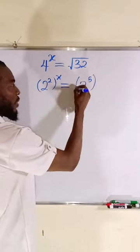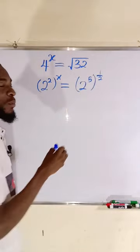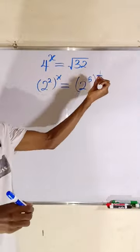But because of the square root, square root is the same thing as the power of 1 divided by 2. Multiply the exponents.